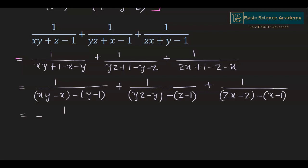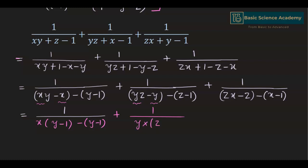We can take x common in the first denominator, giving x(y minus 1) minus (y minus 1). Taking y common in the second denominator gives y(z minus 1) minus (z minus 1). Taking z common in the third denominator gives z(x minus 1) minus (x minus 1).